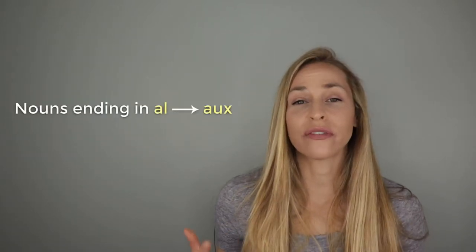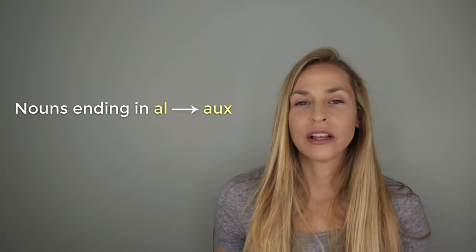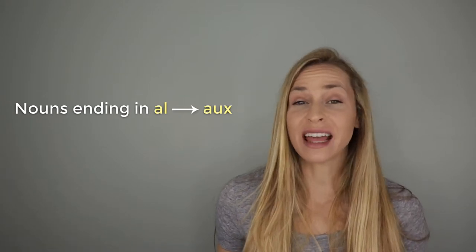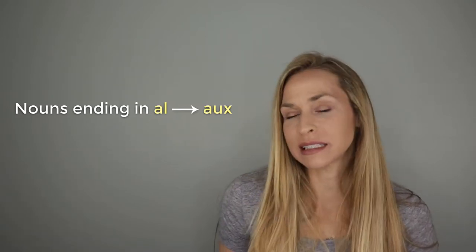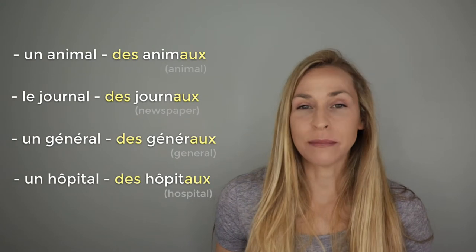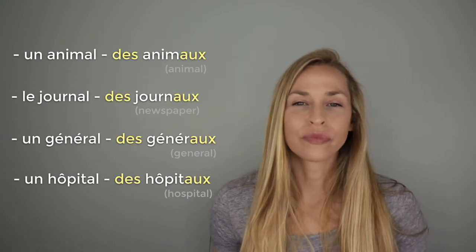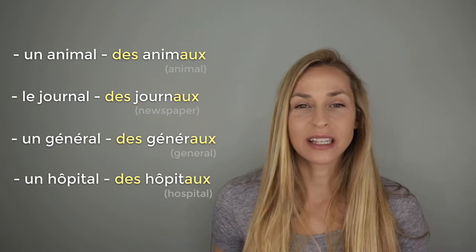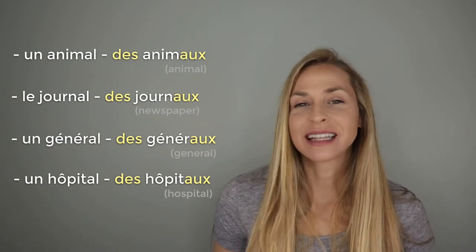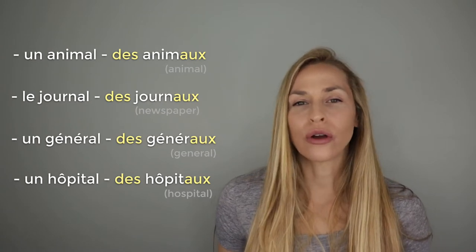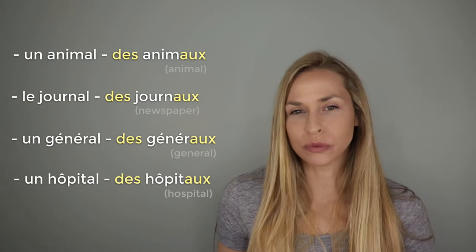The next series are nouns that finish in AL (A-L). The way we form the plural of nouns that finish in AL is AUX (A-U-X). Let's go over a few: un animal, des animaux. Le journal, des journaux. Un général, des généraux. Un hôpital, des hôpitaux. And surprise — there are some more exceptions for these ones, so don't get discouraged.